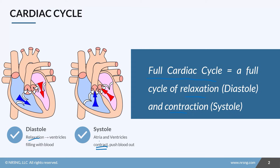The atria will actually contract a split second before the ventricles — we call that our atrial kick. That just helps to fill the ventricles all the way before they push the blood out to the body. So you have atrial systole, then ventricular systole a split second later. When the ventricles contract, they force blood out of the pulmonary artery and the aorta to go out to the lungs or to the body.